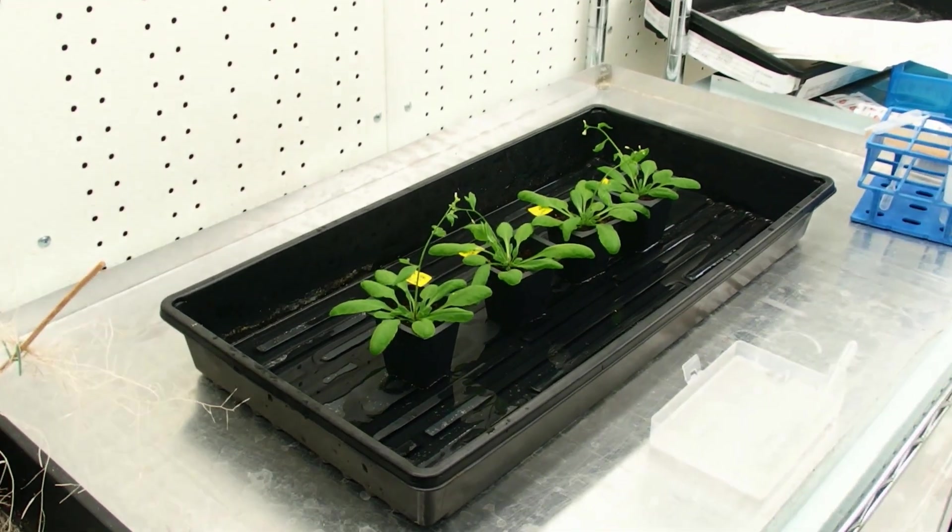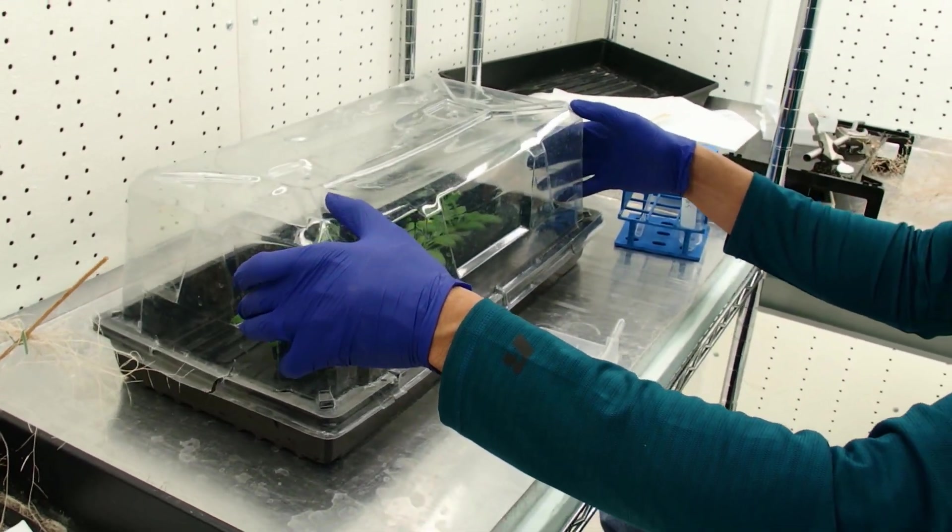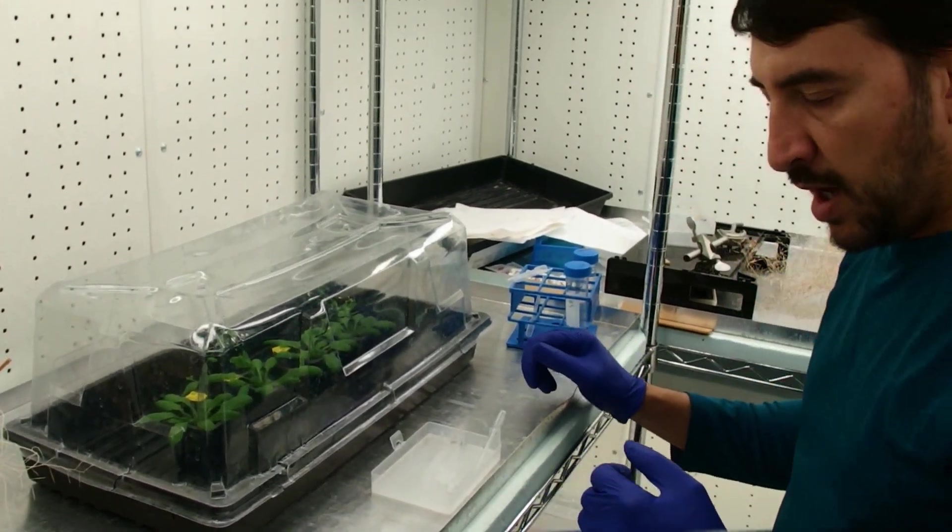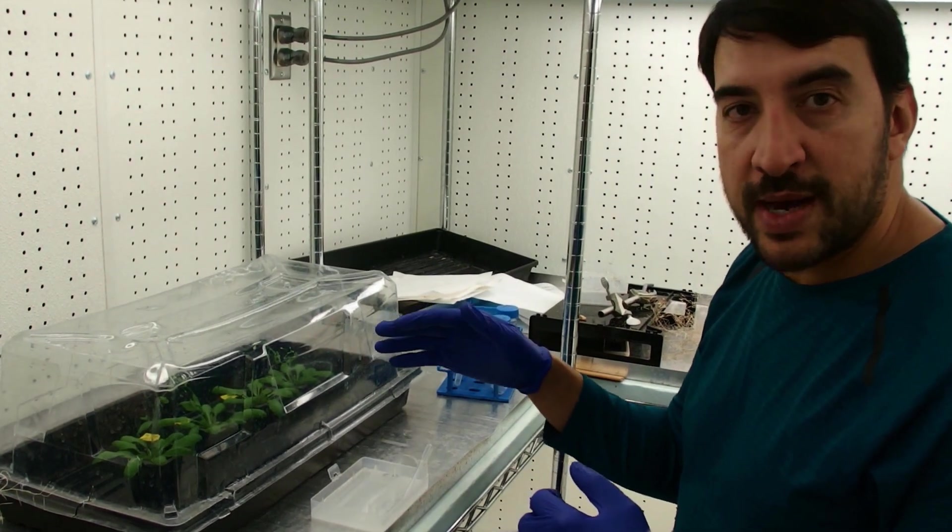And then I'm going to close this with a dome. The dome will maintain 100% humidity, which will allow the agrobacterium to colonize the Arabidopsis.